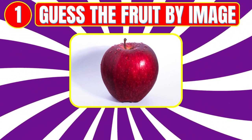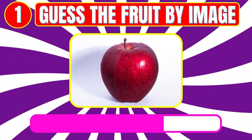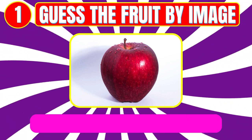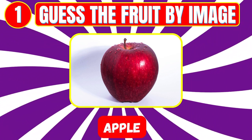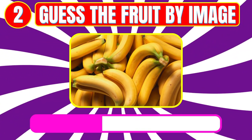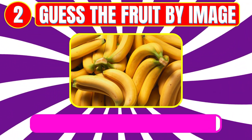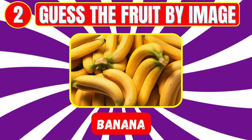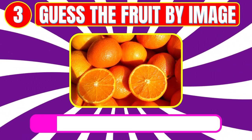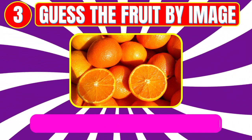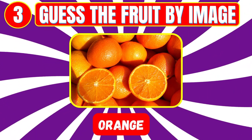Level number one. Guess the fruit by image. Fruit name is apple. Level number two. Guess the fruit by image. Fruit name is banana. Level number three. Guess the fruit by image. Fruit name is orange.